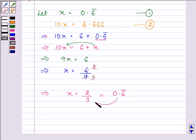So we converted 0.6 bar into a fraction that is in the form of p by q. Right so this completes the first part of the question and the answer is 2 by 3.